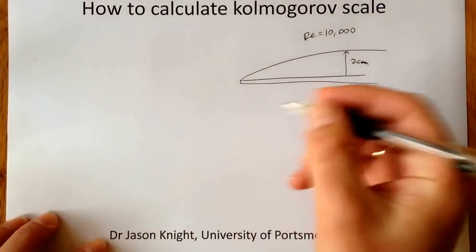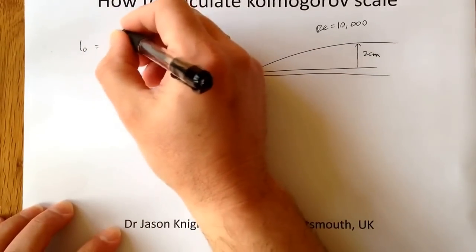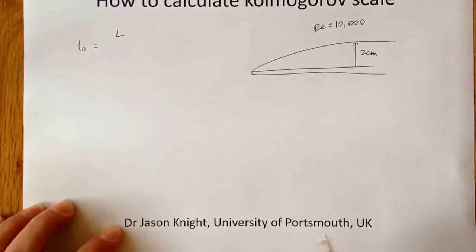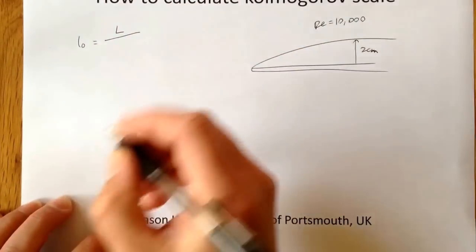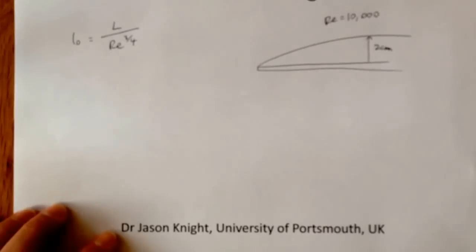Now the Kolmogorov scale is defined as a larger length scale, or a dominant length scale in the flow, divided by the Reynolds number to the power 3 quarters.